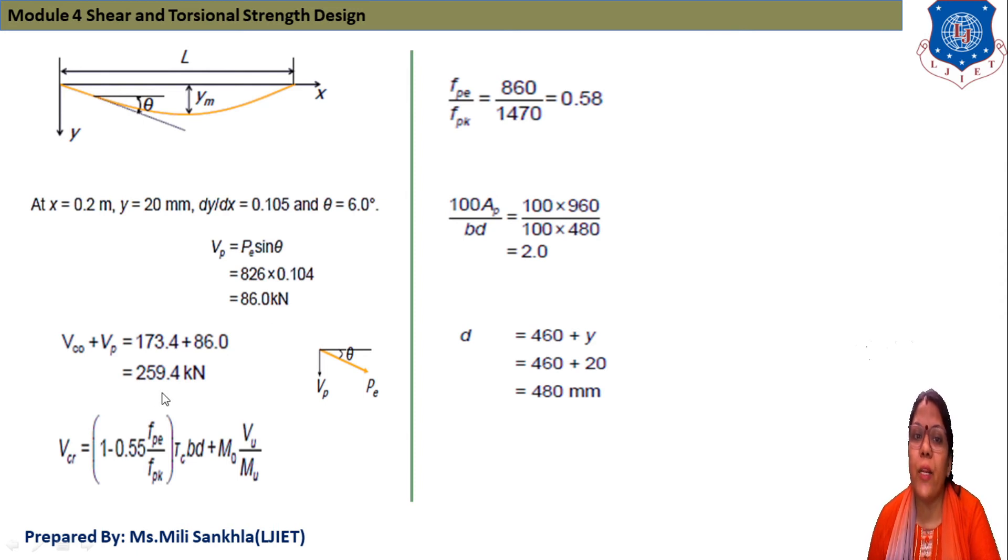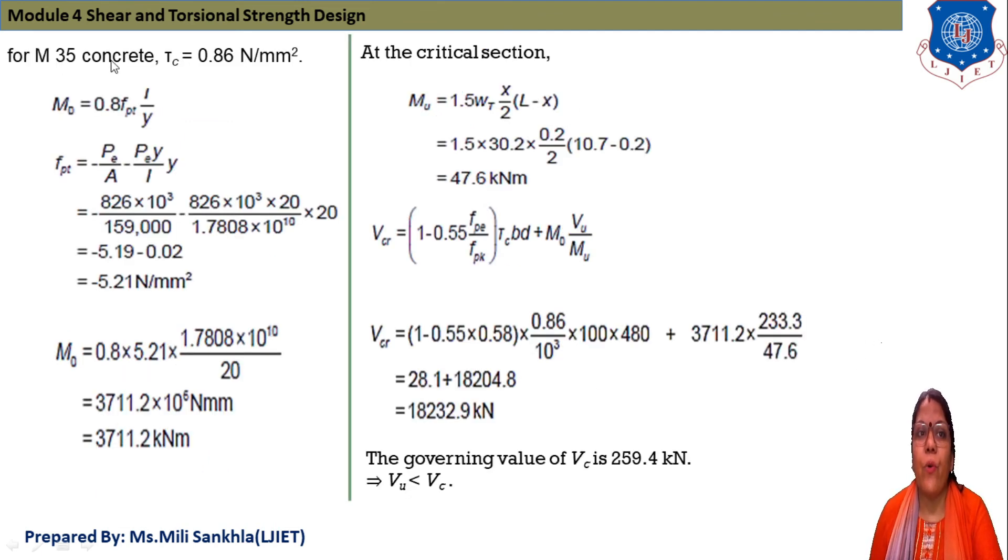Next vertical component of prestressing force can be found from equation of parabolic tendons. The equation of parabolic tendons is y = 4ym/l² × x(l-x) and tan θ equals differentiation dy/dx = 4ym/l² × (l-2x). Now here x equals 0.2 m and ym equals 20 mm. dy/dx equals 0.105, θ equals 6°.